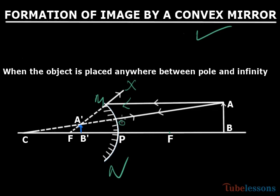It will appear that these two rays AM and AO are diverging from a point A'. So A' will be the image of A, and similarly B' will be the image of B.